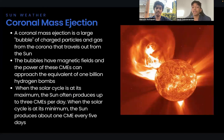When the solar cycle is at its maximum, the sun often produces up to three CMEs per day. When the solar cycle is at its minimum, however, the sun produces only about one CME every five days.